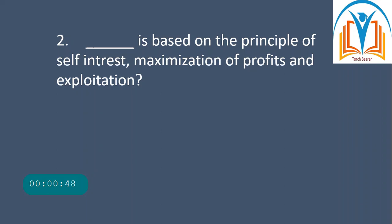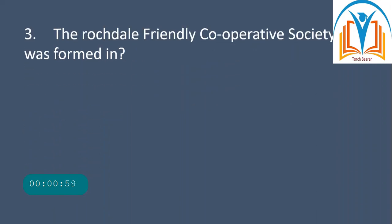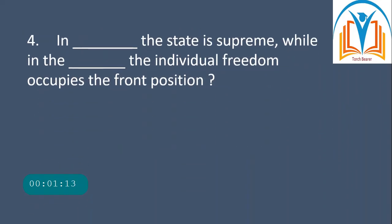The answer is capitalism. Our next question: the Rochdale Friendly Cooperative Society was formed in 1830.